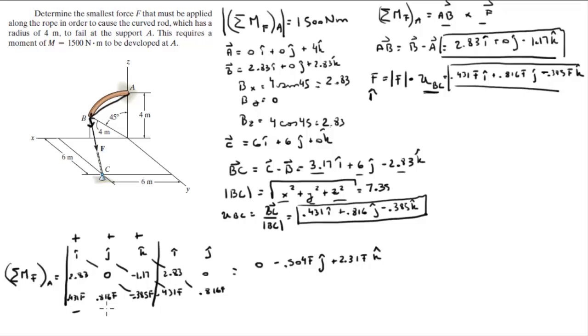Now your negative diagonals. 0.431 times 0 times k is 0. Negative 0.816 times negative 1.17 times i is positive 0.954 in the i. Negative negative 0.385 times 2.83 times j is positive 1.09F j, and there is an F here, this i, they all have the F.